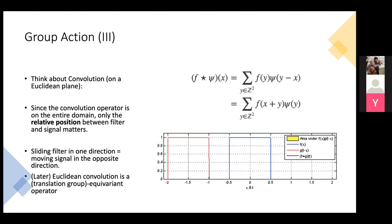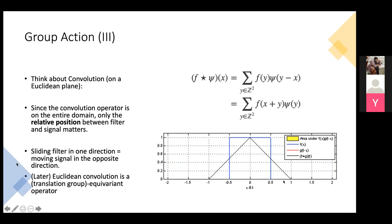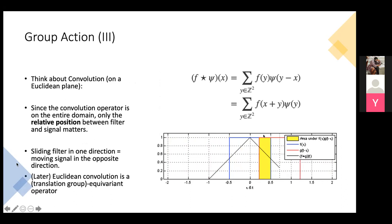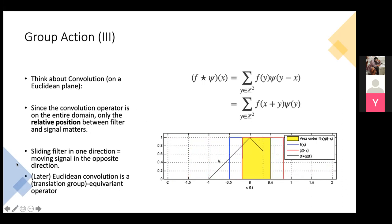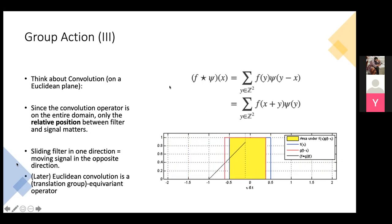Another example of a group action is convolution. In the classic signal processing definition, you have a signal and you slide a filter over the entire domain — the set of all real numbers or two-dimensional grids. You can either fix your signal and slide the filter, or fix the filter and move your signal in the opposite direction. Because you are doing this over the entire domain, these two operations are equivalent. This is another example of a group action.